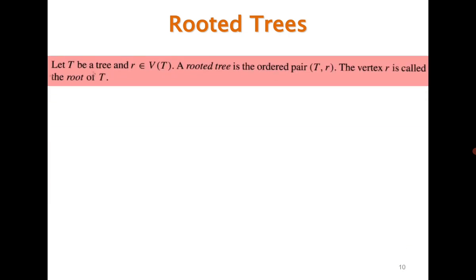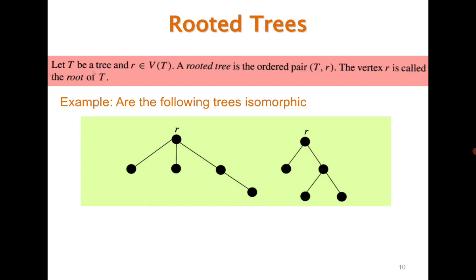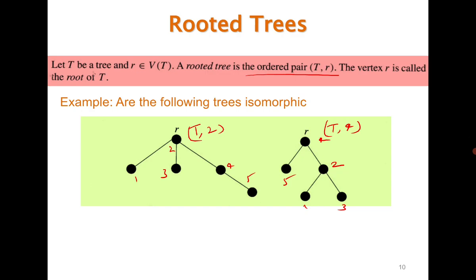The next concept is rooted trees. Consider the following graphs. Number the vertices 1, 2, 3, 4, 5 where vertex 2 is the vertex of degree 3, adjacent to 1, 3, 4, and 5. Both trees are isomorphic as unrooted trees. But as rooted trees, one is represented as T rooted at 2 and the other as T rooted at 4. A rooted tree is the ordered pair (T, r) where r is the root. Since they have different roots, as rooted trees they are not isomorphic.